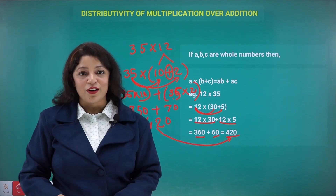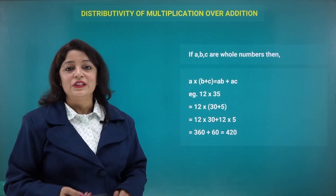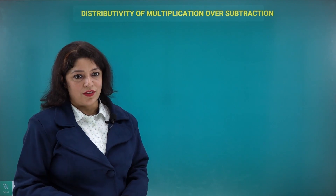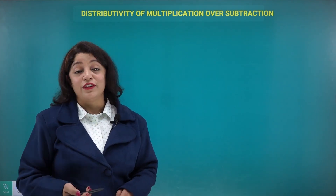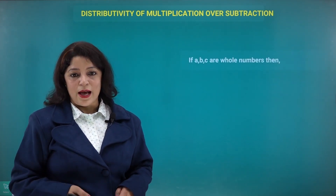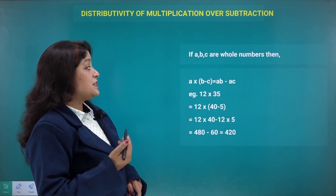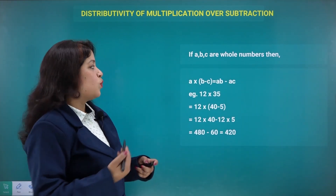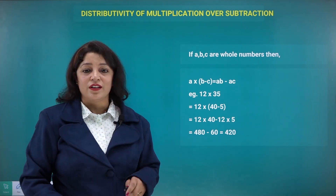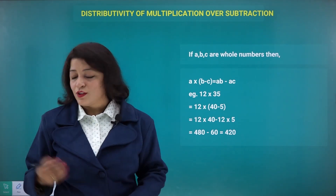The distributive property over addition is now clear. Let's move to distributivity over subtraction — a very simple extension. As we did for addition, the same thing applies for subtraction. If a, b, c are three whole numbers, then a times (b − c) gives you a×b minus a×c.